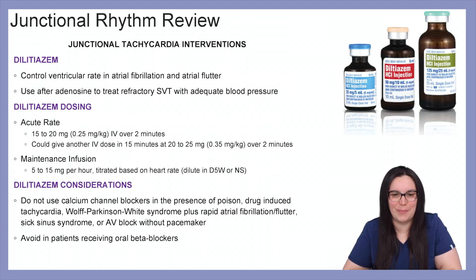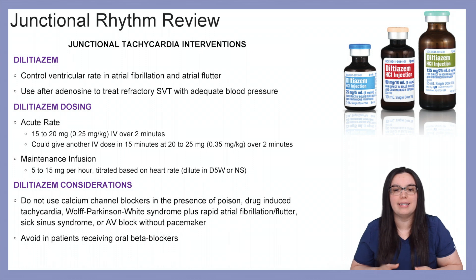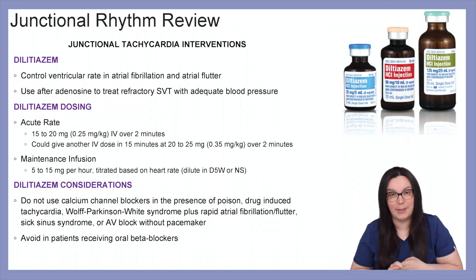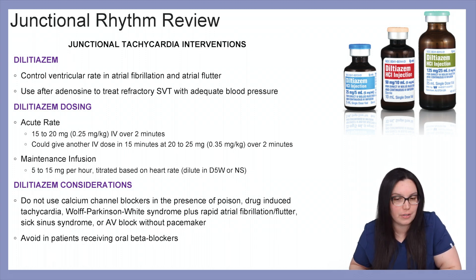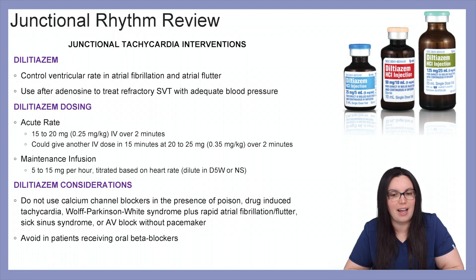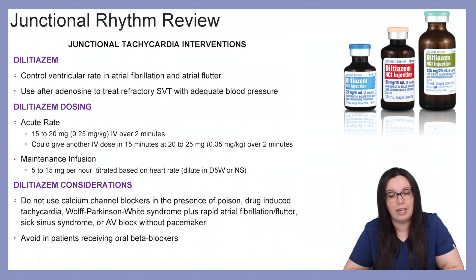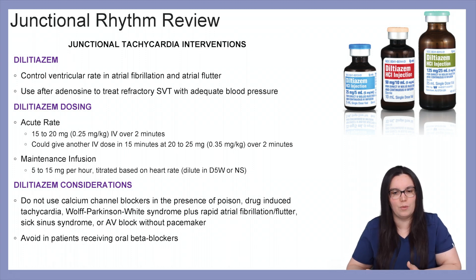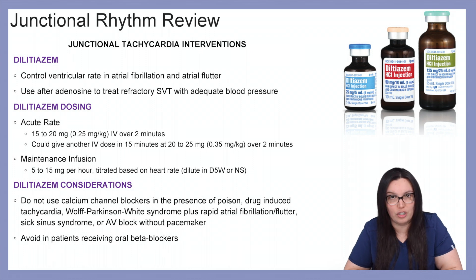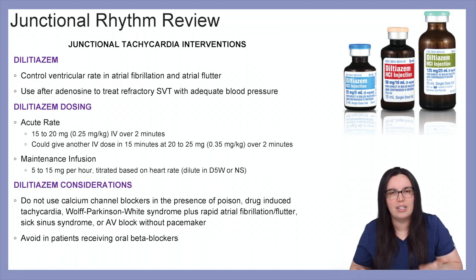Let's talk about diltiazem. We use this to control ventricular rates in atrial fibrillation and atrial flutter, and it's used after adenosine to treat refractory SVT with adequate blood pressures. The initial IV dose is 15 to 20 milligrams over two minutes. A second IV dose of 20 to 25 milligrams over two minutes can be given in 15 minutes if needed. Maintenance infusions are 5 to 15 milligrams per hour, titrated based on heart rate, diluted in D5W or normal saline.